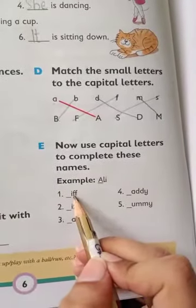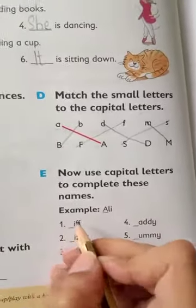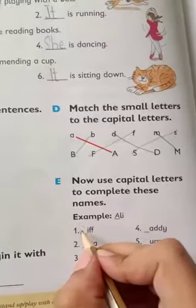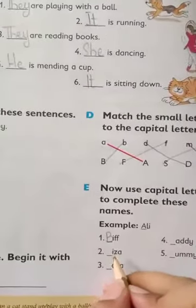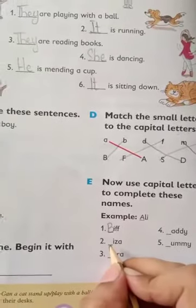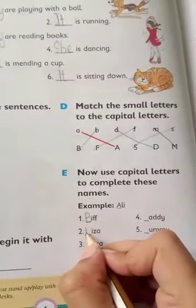Dash I double F. Biff. What should I write here to make this word Biff? B. Next is I, Z, A. Yahaan ke kis ka name bende raha hai, Fizza. F.